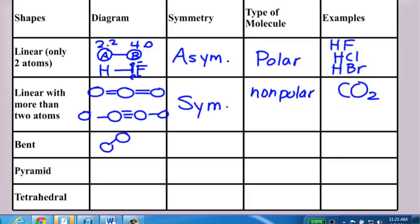Bent, central atom two bonds, that is asymmetrical, that is also a polar molecule. The most classic example of that is water. H2S is another common example that you may be asked.